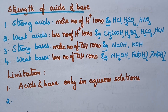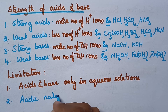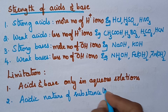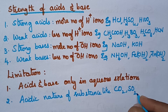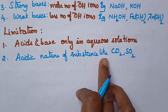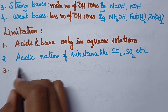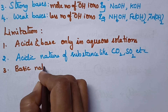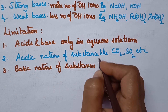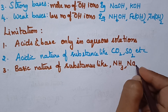At the same time, this theory could not explain the acidic nature of substances like CO2, SO2, etc. Arrhenius theory could also not explain the basic nature of substances like ammonia, sodium carbonate, etc.